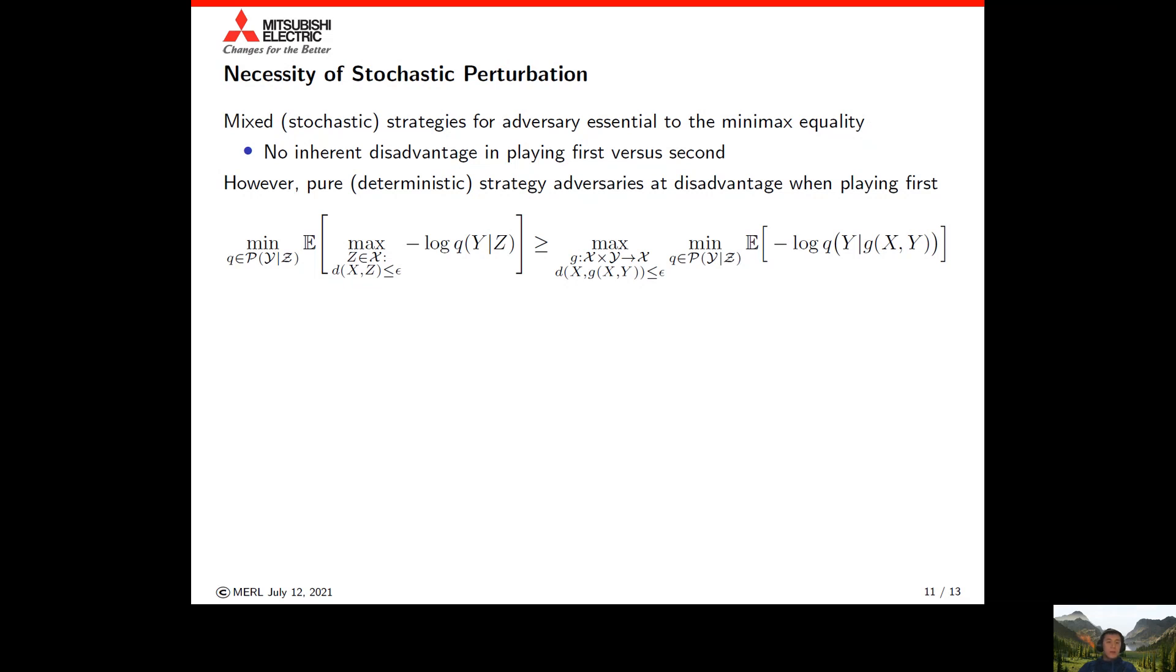Here in this formulation on the left hand side, we have the original style of robust ML formulation, considering the worst case perturbation inside the expectation. This can be taken out of the expectation by considering a function that maps from X and Y to Z. But restraining this to be a deterministic function and swapping the order results in a strict inequality.